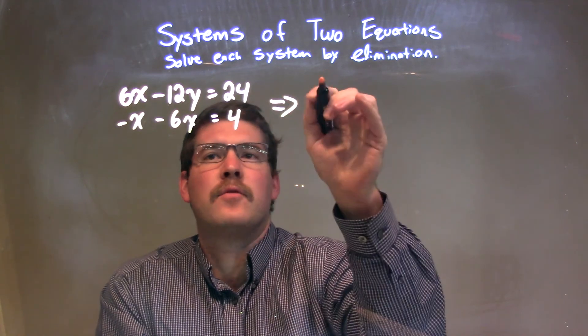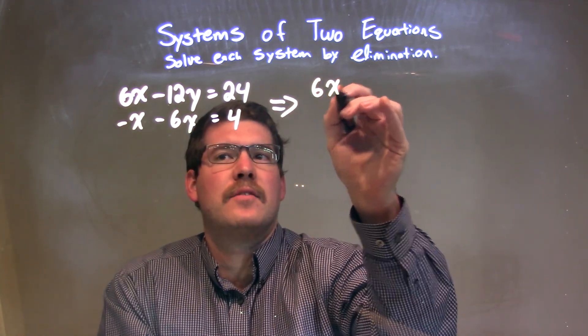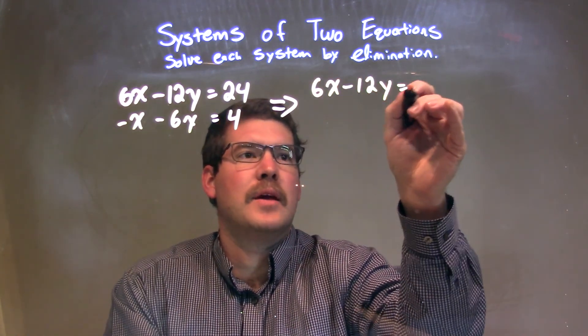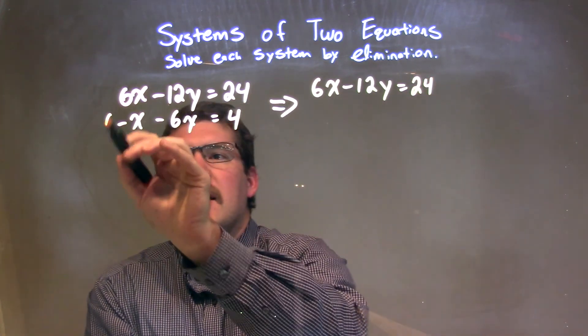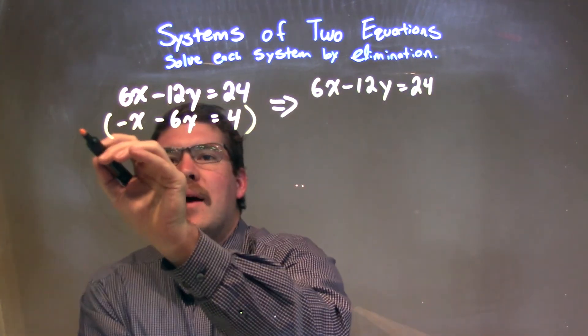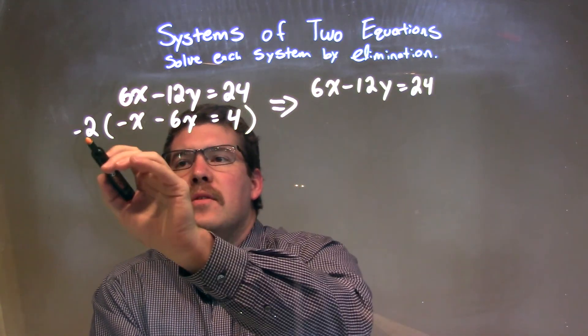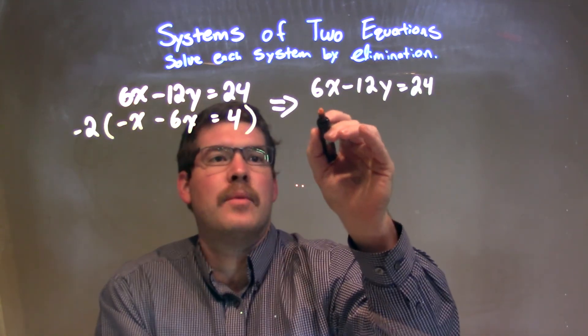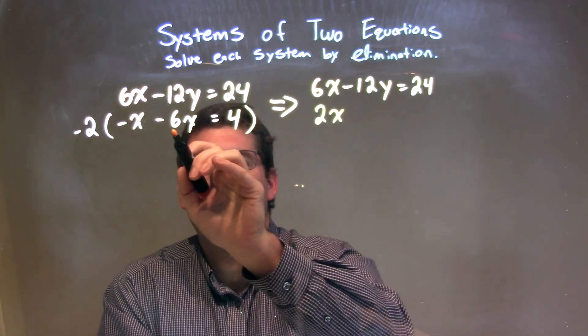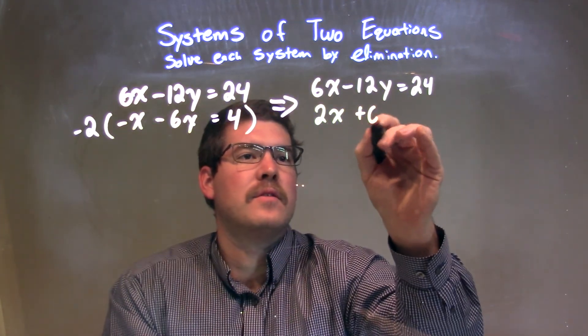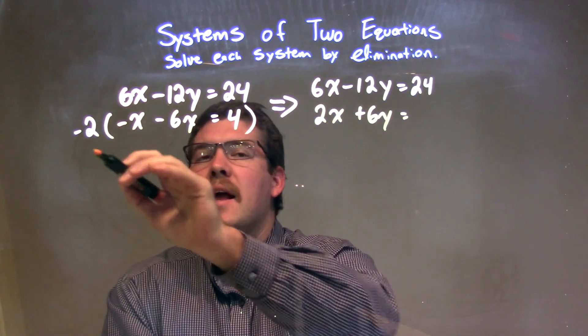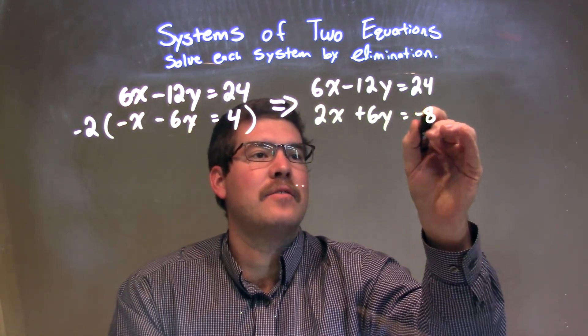I'm going to rewrite the first equation: 6x minus 12y equals 24. But the second equation, I'm going to multiply it by negative 2, and that's the whole equation. Negative 2 times negative x is a positive 2x. Negative 2 times negative 6y is positive 6y. And negative 2 times 4 is negative 8.